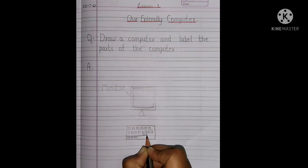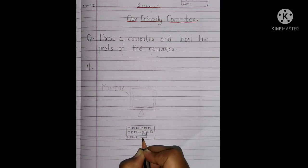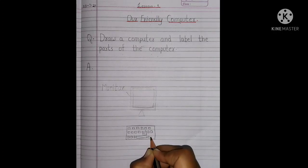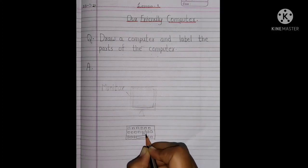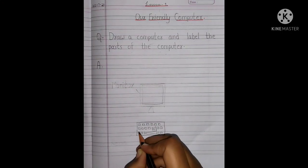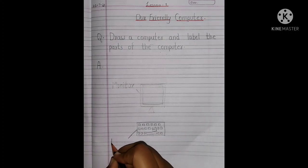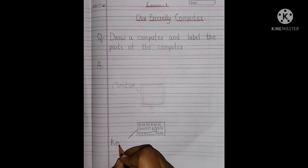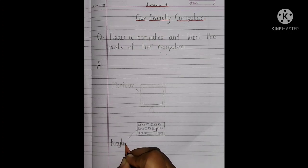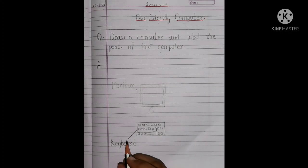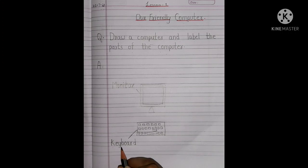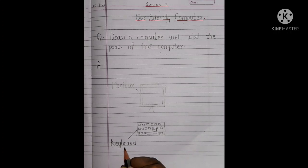And then, see this long bar, children? This is called a space bar. What is this, children? This is an enter key. And this is a space bar. Now, what is the spelling of the keyboard, children? The spelling of the keyboard is K-E-Y-B-O-A-R-D. What is it, children? K-E-Y-B-O-A-R-D. Keyboard.